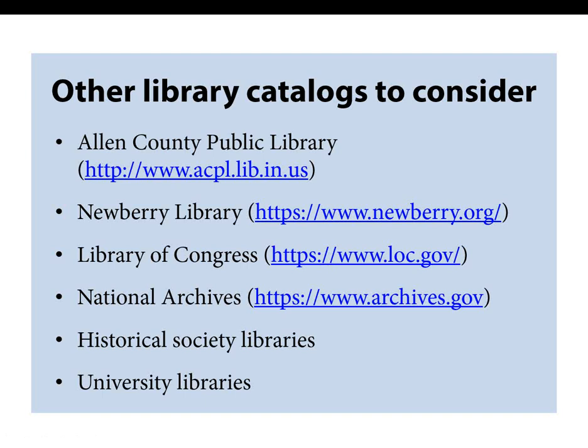Some other catalogs you may want to explore: the Allen County Public Library in Fort Wayne, Indiana, and the Newberry Library in Chicago both have large genealogy and local history collections. The Library of Congress has millions of books, recordings, photographs, newspapers, maps, and manuscripts in print and digital format, as well as guides to their collections. The National Archives for record collections, maps, photos, and other government information and guides. Historical libraries for local collections — small societies may have catalogs online but may not be part of WorldCat. University libraries: special collections departments have yearbooks and other information if your ancestor was a student there. And always check the library catalog of any library you're considering visiting.